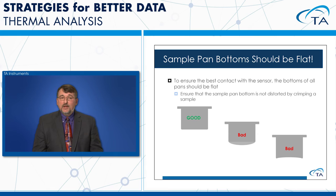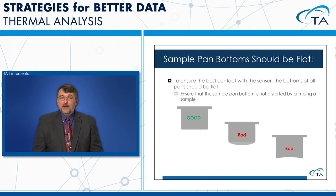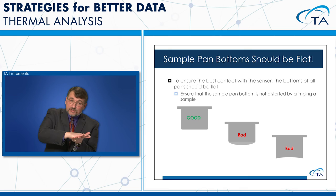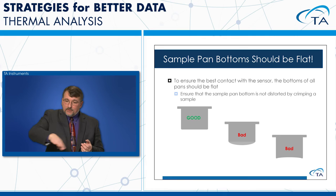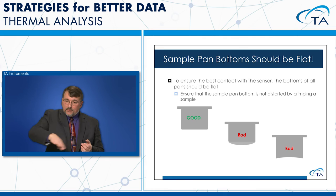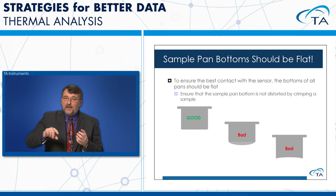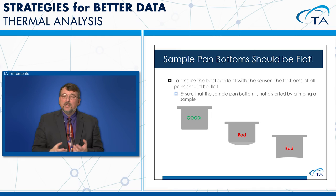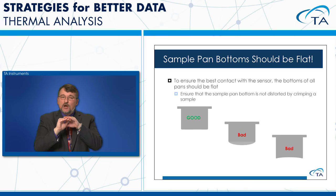The bottom of the sample pan needs to be flat. T0 pans maintain flat bottoms that sit on the flat sensor for best thermal contact. If too large a sample causes the pan bottom to curve, the pan can rock on the sensor. If the pan is crimped unevenly and curves, it also won't sit flat. A flat pan on a flat sensor gives the best thermal contact and best performance.